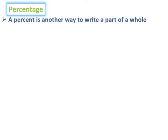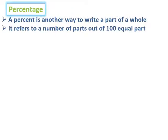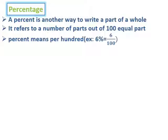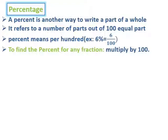And now, percentage. A percent is another way to write a part of a whole. It refers to a number of parts out of 100 equal parts. Percent means per 100. For example, 6% is equal to 6 per 100 or 6 over 100. To find the percent for any fraction, we multiply by 100. Let us take examples. Example 1: Calculate the percent of half. We multiply half by 100. It's equal to 0.5 times 100, or we can simplify 100 by 2. In both cases, we will get the same answer, which is equal to 50%.